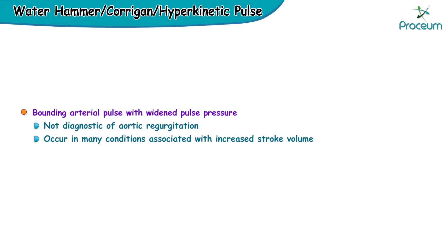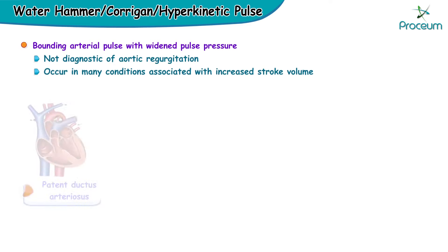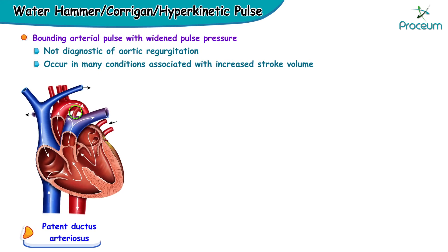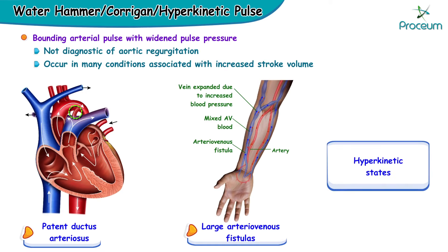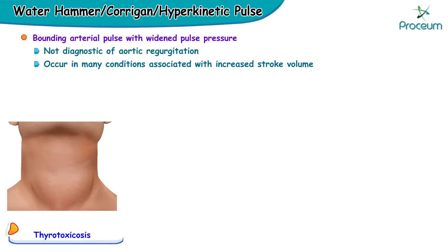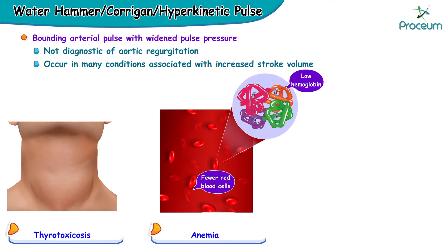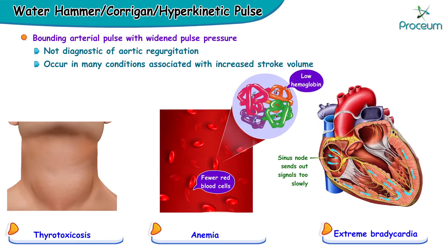It can occur in many conditions associated with increased stroke volume, such as patent ductus arteriosus, large arteriovenous fistulas, hyperkinetic states, thyrotoxicosis, anemia, and extreme bradycardia.